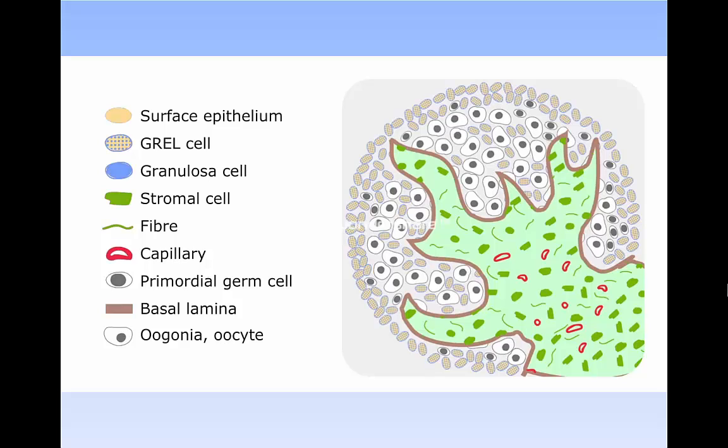Note that as the stroma penetrates, it branches, creating areas of stroma alternating with GREL and germ cells. So, in effect, it's this action that creates the ovigerous cords. And again, note that the surface is not covered by a surface epithelium at this time.